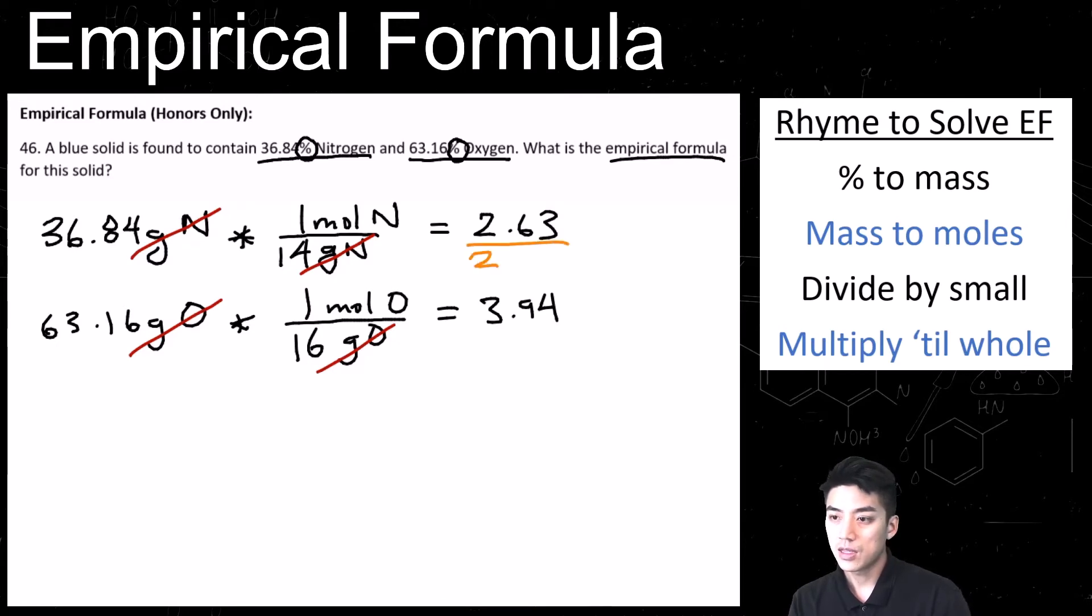So the next part of the rhyme is called divide by small. So I look at my set of numbers, and I realize 2.63 is the smallest. So I'm going to divide both of them by 2.63, and we're left with 1 and 1.5. And the next step says multiply till whole.